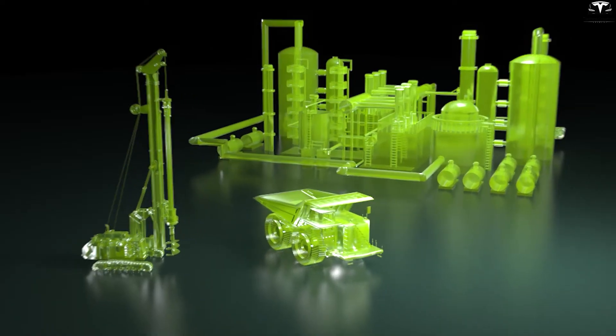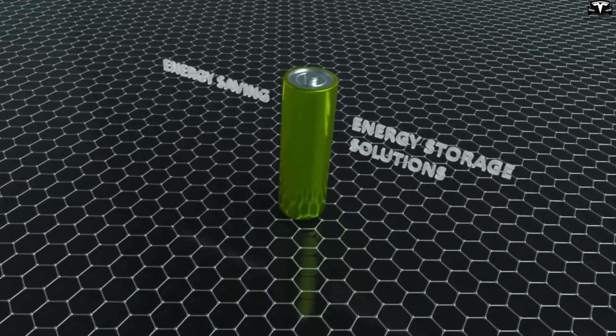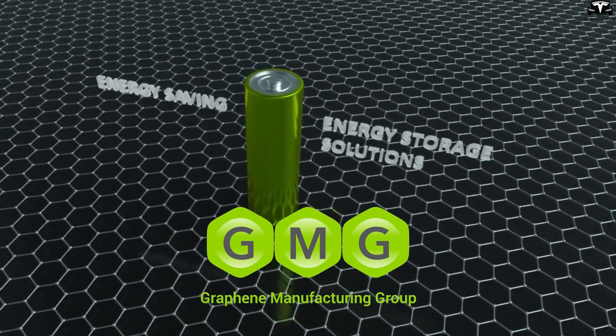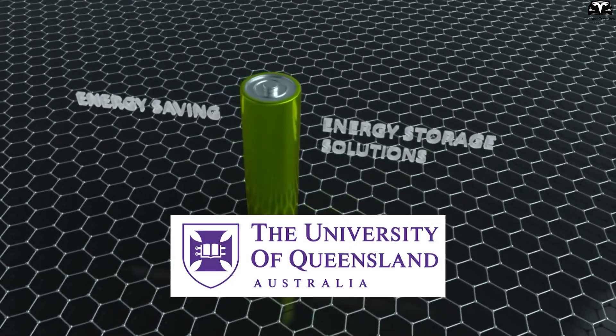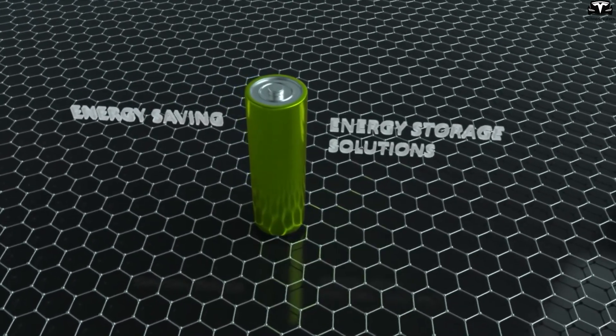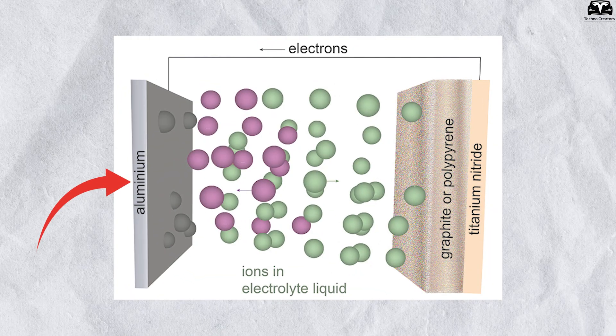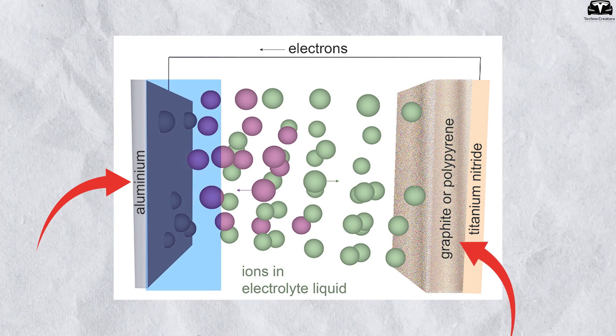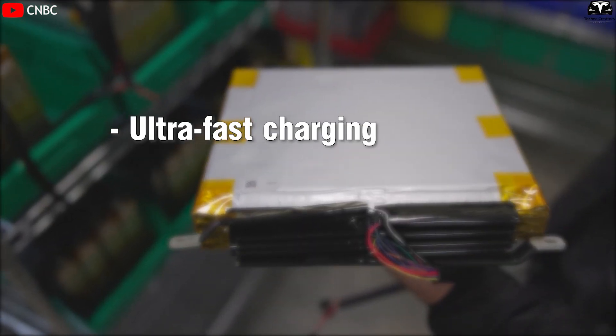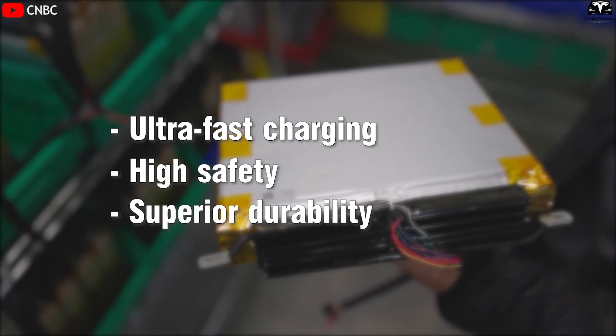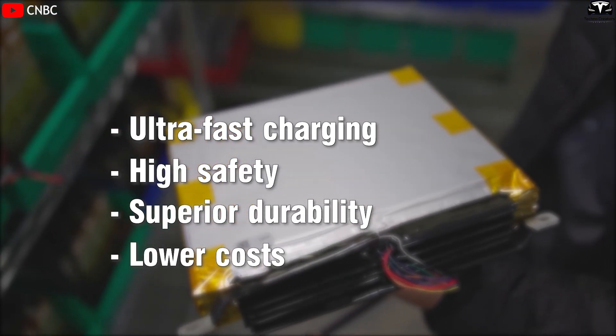Against this backdrop, Graphene Aluminum Ion batteries developed by Graphene Manufacturing Group in Australia, in collaboration with the University of Queensland, have emerged as a revolutionary alternative. Using an aluminum anode, graphene cathode, and liquid ionic electrolyte, this technology promises ultra-fast charging, high safety, superior durability, and significantly lower costs.